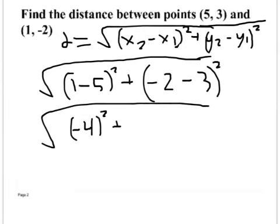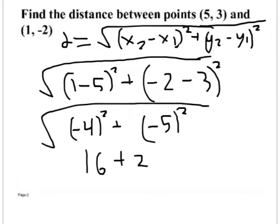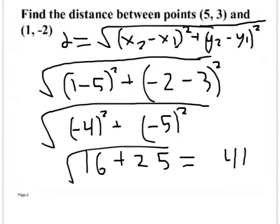Distance can't be negative, but we don't need to worry about getting negative numbers inside the radical because we're squaring them, which makes them positive. Negative two minus three is negative five. Negative four squared is 16, and negative five squared is 25 — a negative times a negative is always positive. 16 plus 25 is 41.